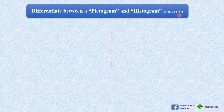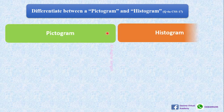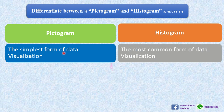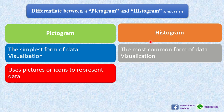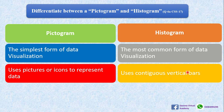Question number one, question number six A: differentiate between pictogram and histogram. Pictogram and histogram have these differences. One, pictogram is the simplest form and histogram is also a simple and most common form of data visualization. Both are used for data visualization — on both graphs we show data. A pictogram uses icons or pictures to represent the data.